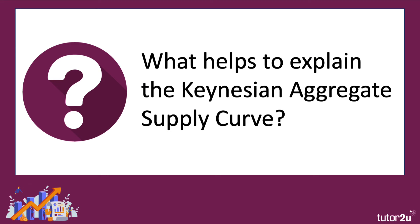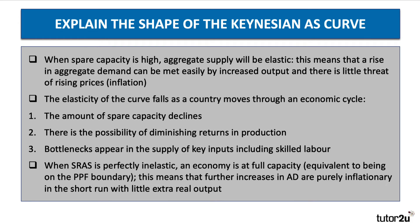So what helps to explain the Keynesian aggregate supply curve? Critically, the amount of spare capacity is fundamental. When there is lots of spare capacity — for example, unemployment is high or businesses are working at half capacity — aggregate supply will be elastic and an increase in AD can be met easily by increased production, with little threat of inflation. But as you move through a cycle, as your economy recovers from a recession and moves into the boom phase, the amount of spare capacity declines, unemployment falls, and there's the possibility of diminishing returns in production. Bottlenecks tend to appear in the supply of key inputs — firms may not get the skilled labour they need, and there might be shortages of key raw materials or component parts. When the aggregate supply curve is perfectly inelastic, the economy is at full capacity, equivalent to being on the PPF boundary, meaning further increases in aggregate demand are purely inflationary with little extra real output.